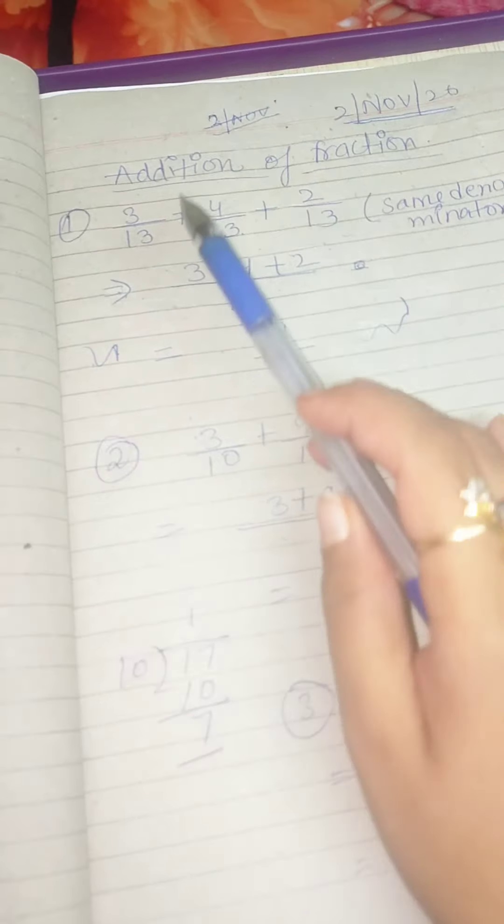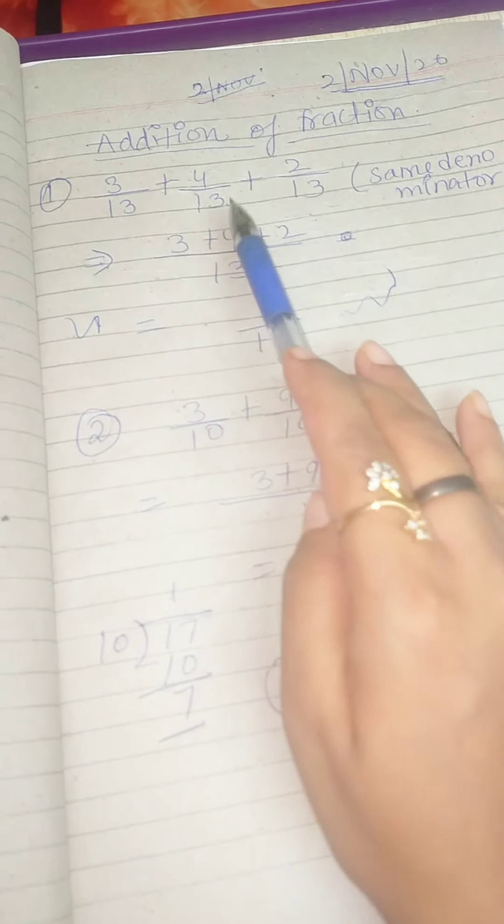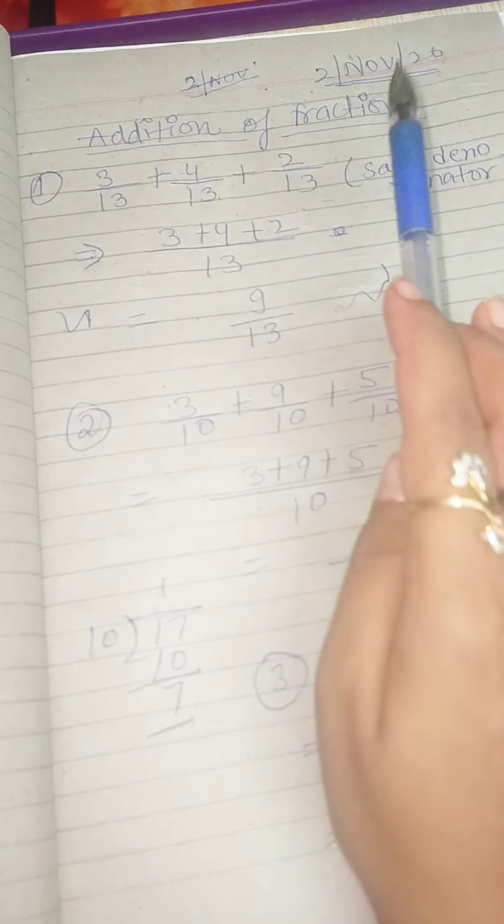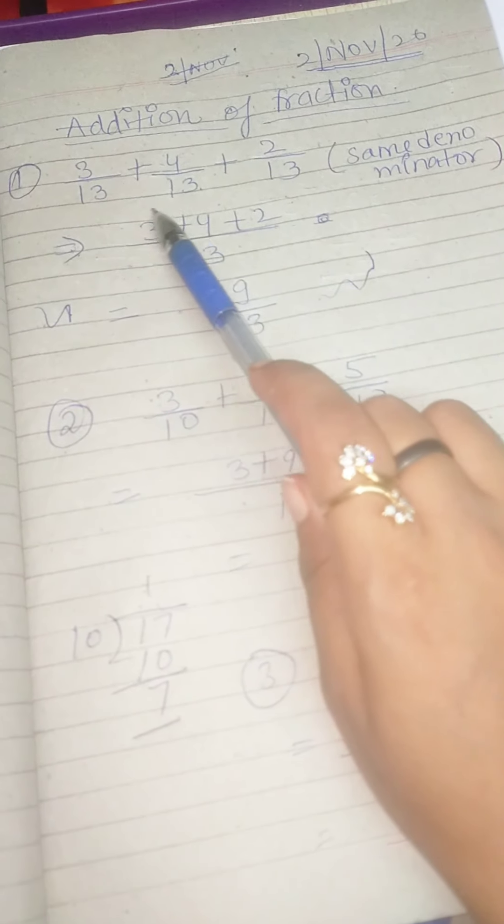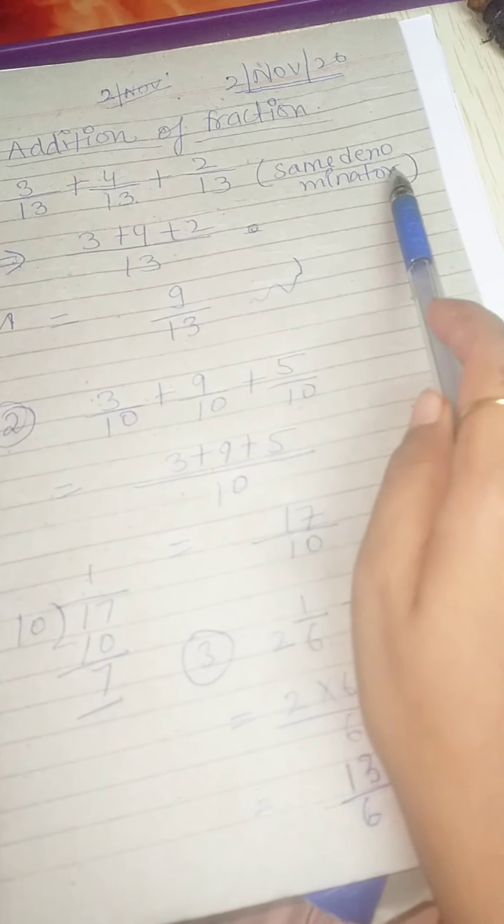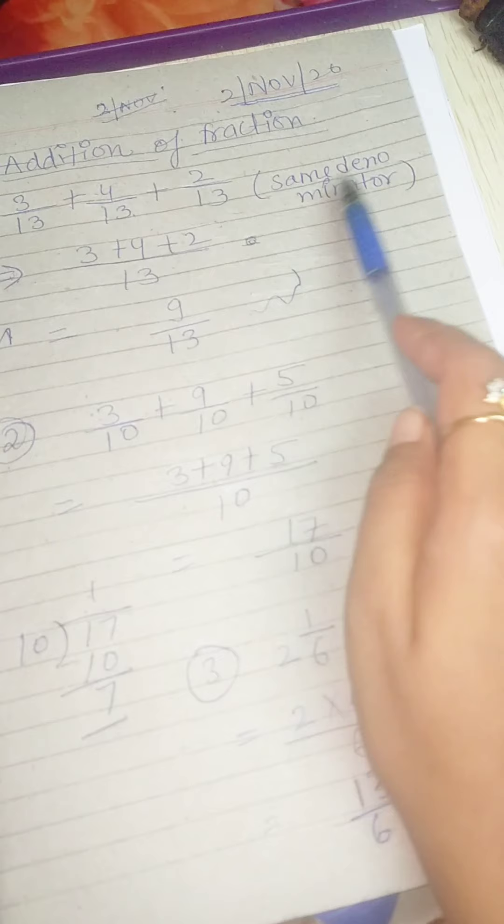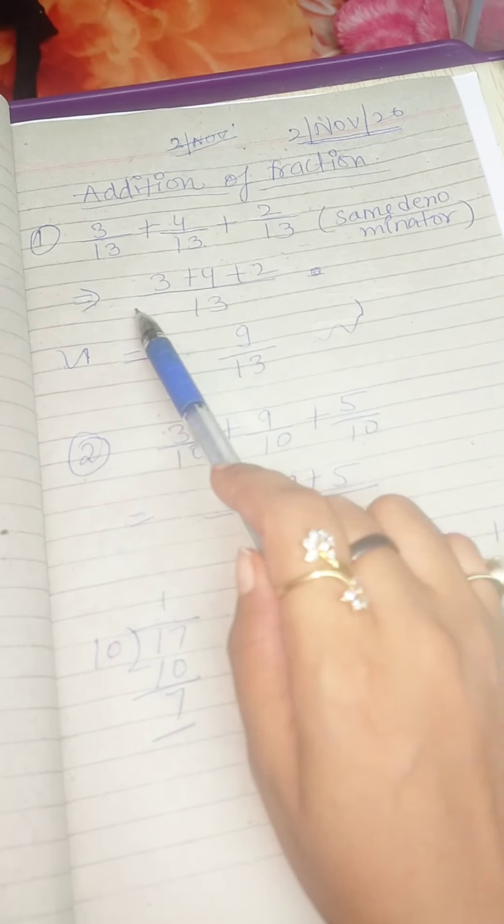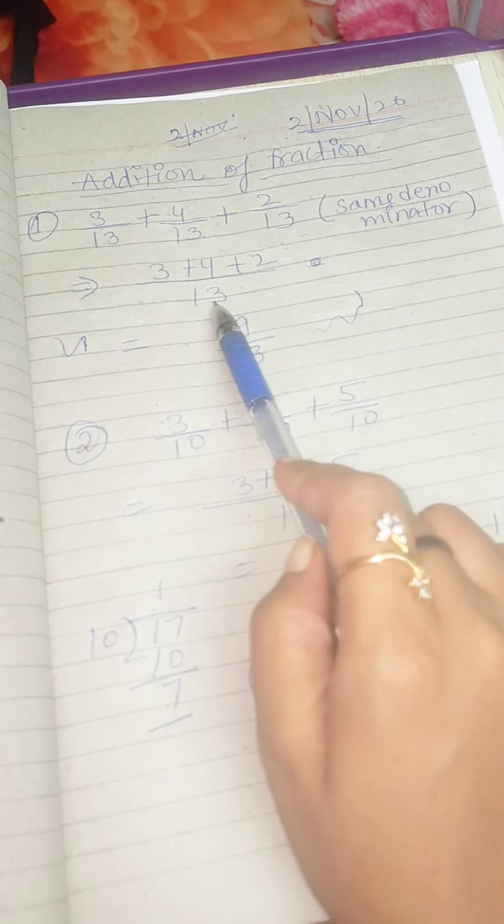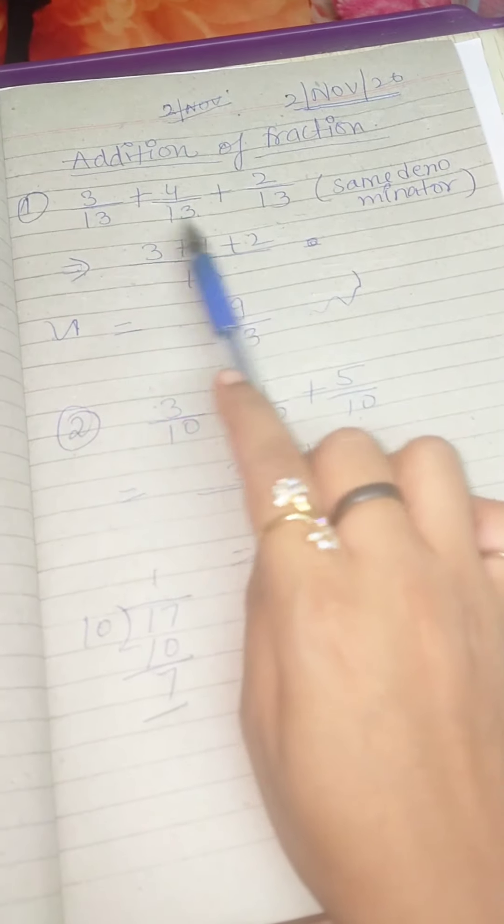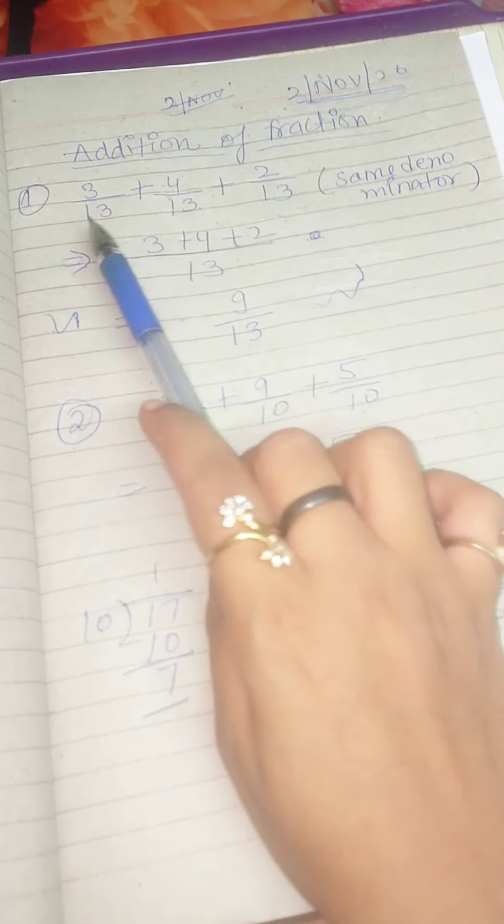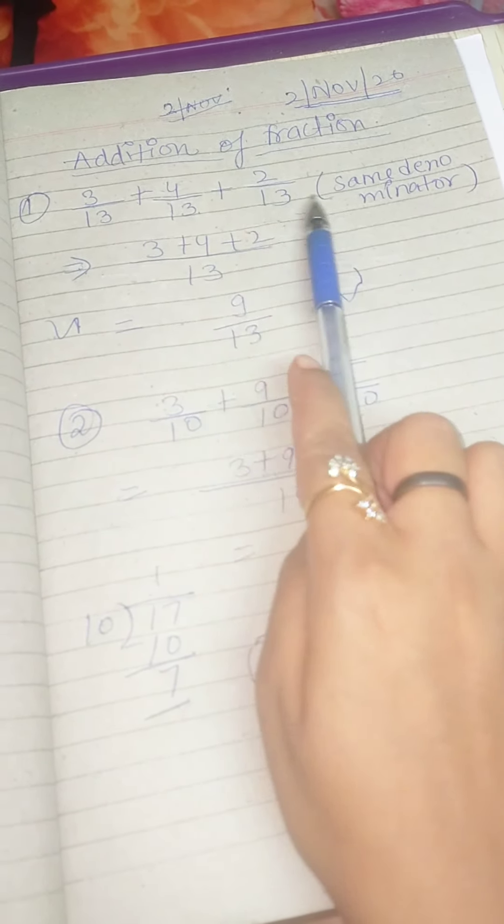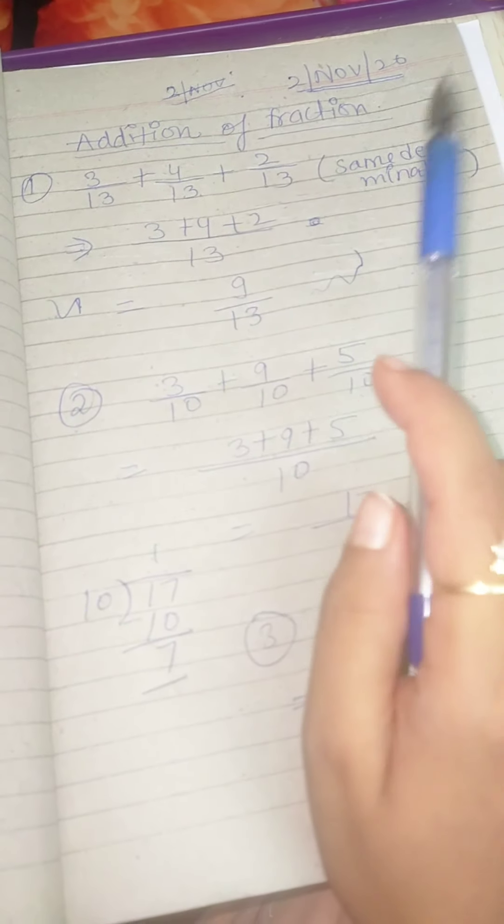Addition of fractions. 3 by 13 plus 4 by 13 plus 2 by 13. This is the question. When your denominators are the same, in that case we will take the denominator as a common denominator. We take 13 as the common denominator and write above 3 plus 4 plus 2.